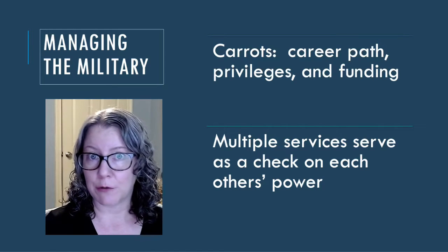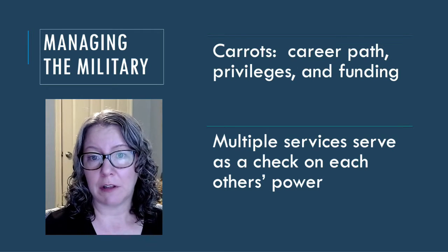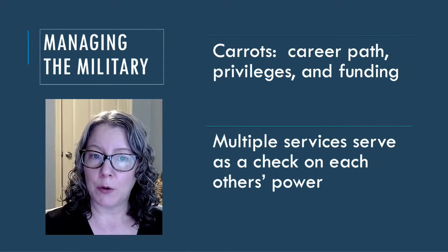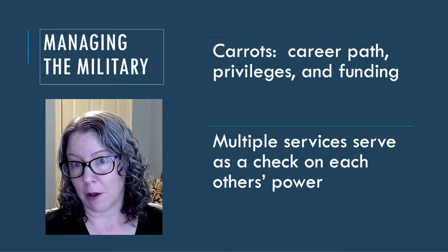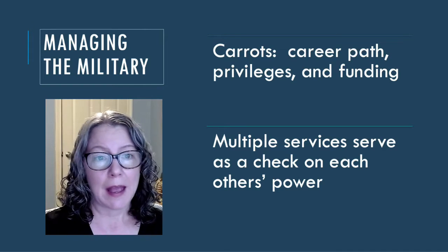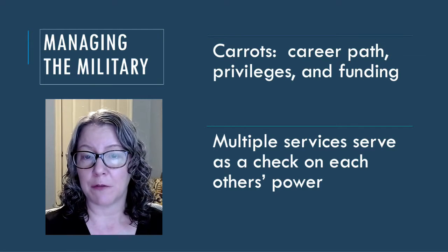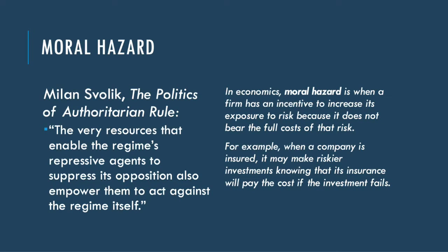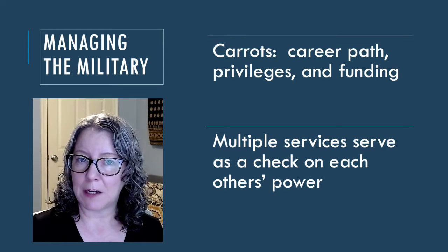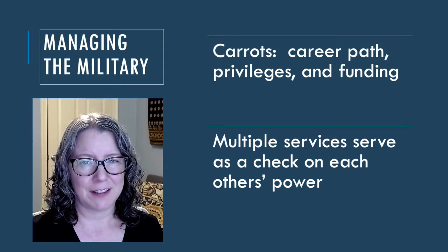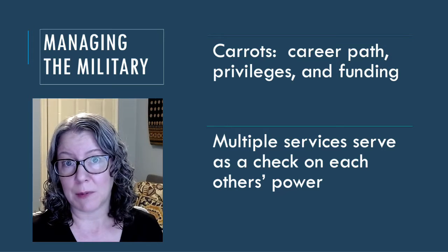Dictators all rely on repression in some form to maintain their rule, and often come to power through the military. This makes maintaining strong relations with the security services essential, both to ensure they can maintain power by controlling other factions in society, and to ensure that the military does not try to take power for themselves through a coup. This is called a moral hazard problem, as described by Milan Svoldyk in The Politics of Authoritarian Rule. He says: 'The very resources that enable the regime's repressive agents to suppress its opposition also empower them to act against the regime itself.' It is hard to use a stick to manage the military, and purges of the security services usually backfire and lead to coups by disaffected officers.